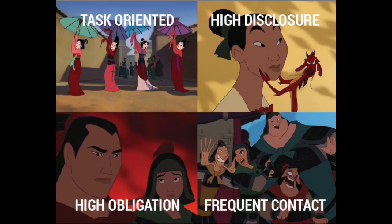With task orientation, Mulan only hangs around the matchmaker girls because each, along with herself, has an interview scheduled. Mushu is Mulan's most trusted friend throughout the whole movie, and she never fails to suppress her emotions in front of him — thus Mushu falls under high disclosure in terms of Mulan's communication. High obligation is seen when Mulan first saved Shang from falling off the mountain, and in return Shang gave a life for a life to Mulan after he found out she committed treason by acting as her father's son to join the army.